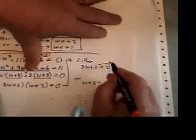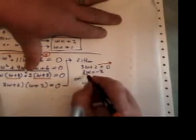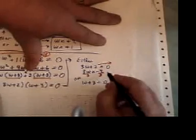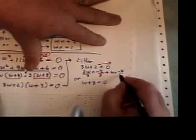Now the first one takes two steps to solve. Start by taking the 2 to the other side and then divide both sides by 3 since the opposite of multiplying is dividing. And this gives you one answer. w equals negative 2 over 3.